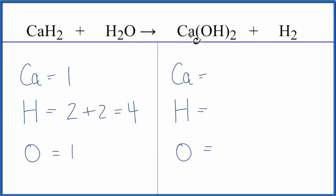On the product side, we have one calcium, and then this two applies to everything in the parentheses. So for the hydrogens, it's two times the one, two hydrogens. And we need to add these two hydrogens over here, so we have a total of four hydrogens.